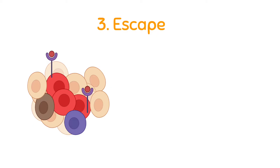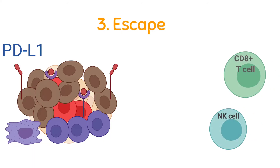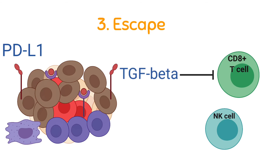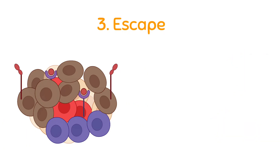Tumors that cannot be recognized and eradicated in the elimination or equilibrium phases progress into the escape phase. Tumors are capable of creating an immunosuppressive microenvironment to evade immune attack. Immunosuppressive cytokines such as TGF-beta suppress the inflammatory T-cell response and CTL activity controlling tumor growth. PDL-1 (Programmed Death Ligand 1), a B7 family member, directly inhibits the immune response. IDO (indoleamine 2,3-dioxygenase) catabolizes tryptophan, allowing tumor cells to produce a physical barrier against immune cells.